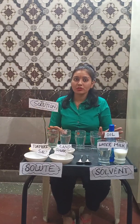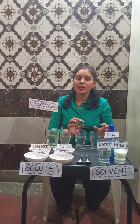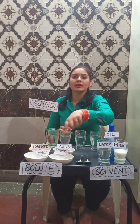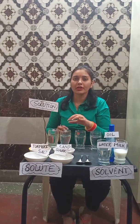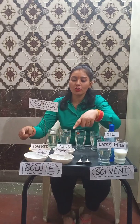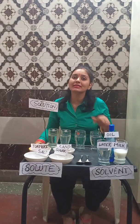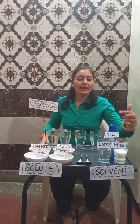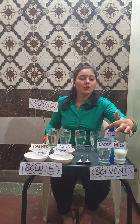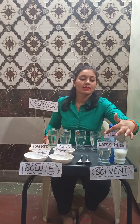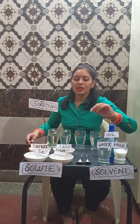I have four glasses of water. I will put these solutes in these glasses of water one by one. I have four solutes: sugar, salt, turmeric, and sand. And I have solvents: milk, water, and oil.